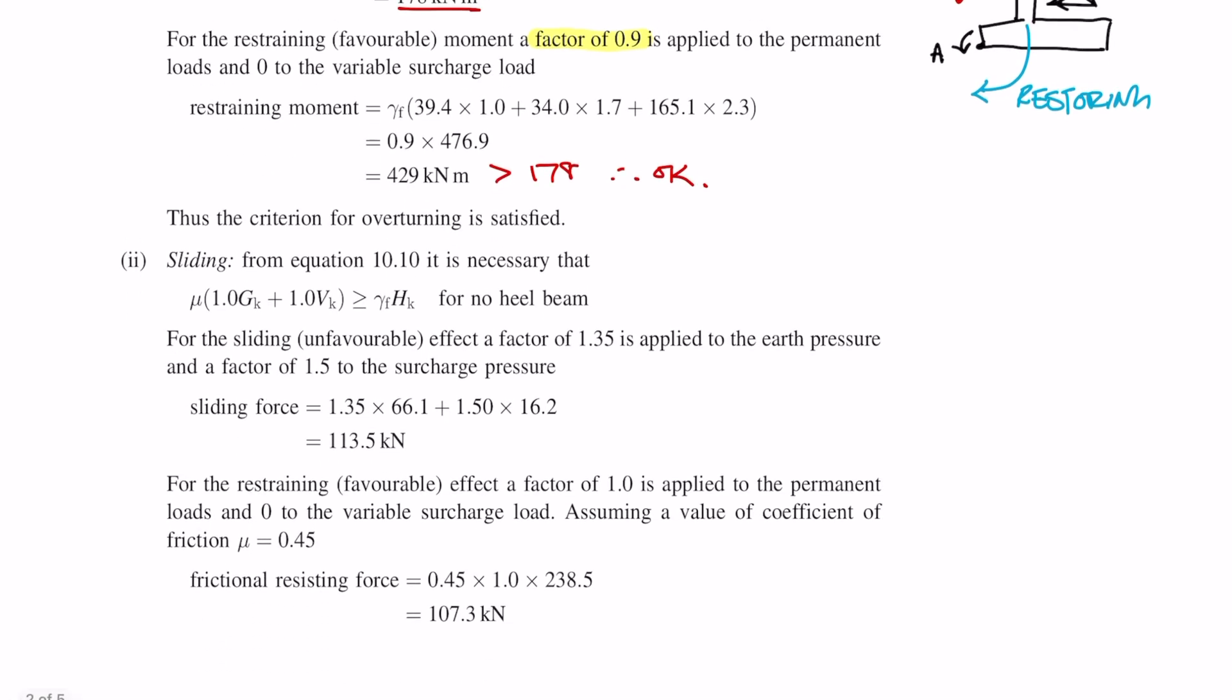Next we move on to the sliding check. First we calculate the factored horizontal forces, which is simply 1.35 times the dead and 1.5 times the live or surcharge. Next we calculate the frictional resisting force by multiplying the coefficient of friction by the vertical forces. We can see that the resisting force is less than the applied sliding force.